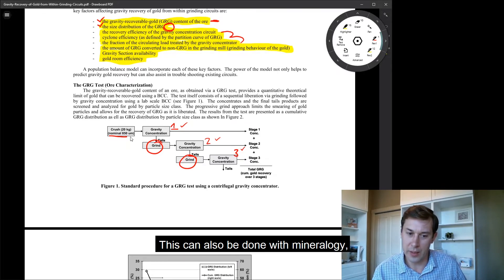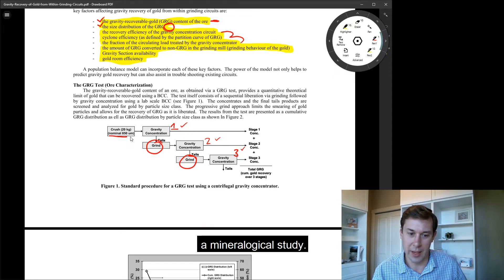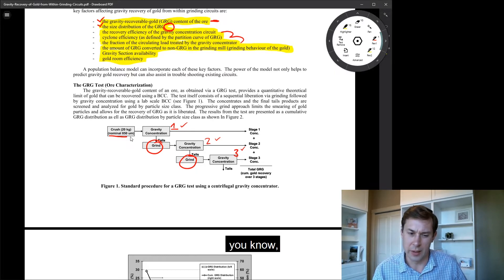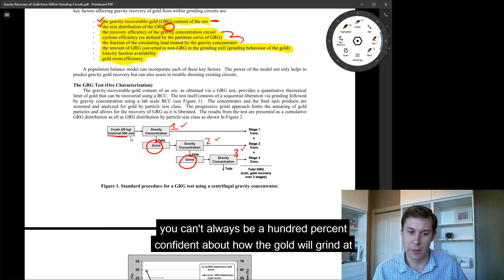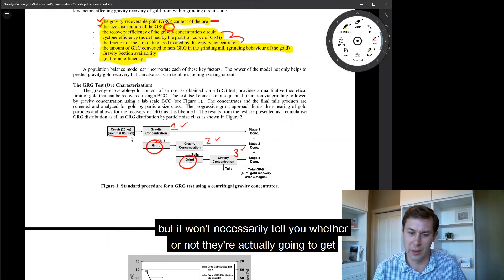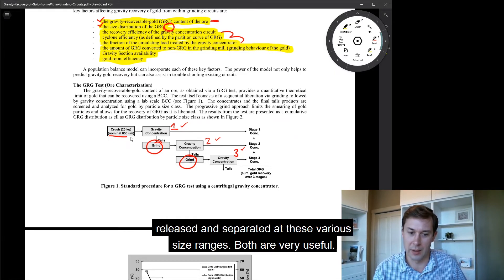This can also be done with mineralogy, a mineralogical study. It's more theoretical and less empirical because you can't always be 100% confident about how the gold will grind at a given size. It can tell you the size of the particles, but it won't necessarily tell you whether or not they're actually going to get released and separated at these various size ranges.